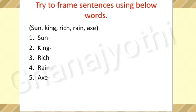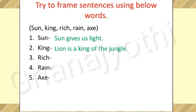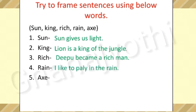Let's begin with the first one — Sun. 'Sun gives us light.' Second one — King. 'Lion is the king of the jungle.' Third one — Rich. 'Deepu became a rich man.' Fourth one — Rain. 'I like to play in the rain.'